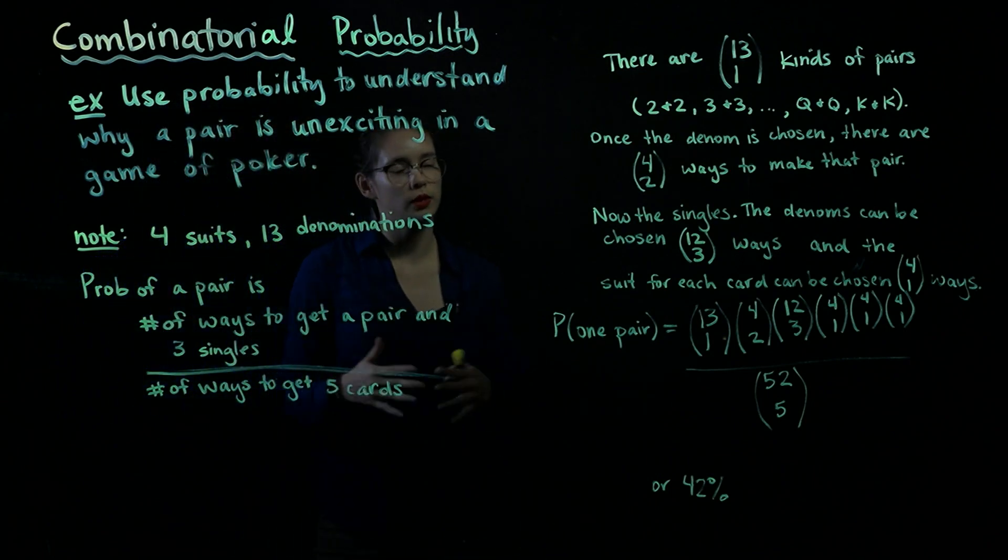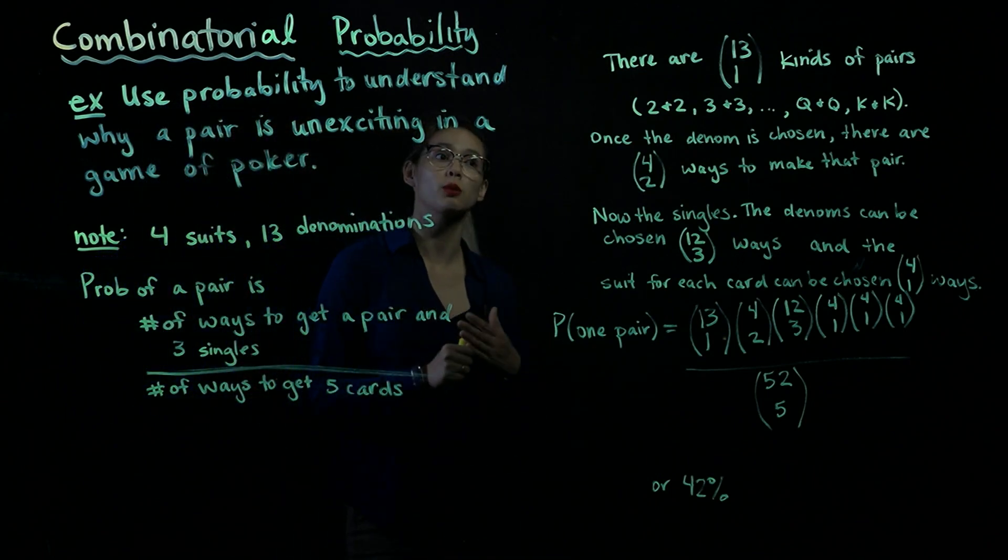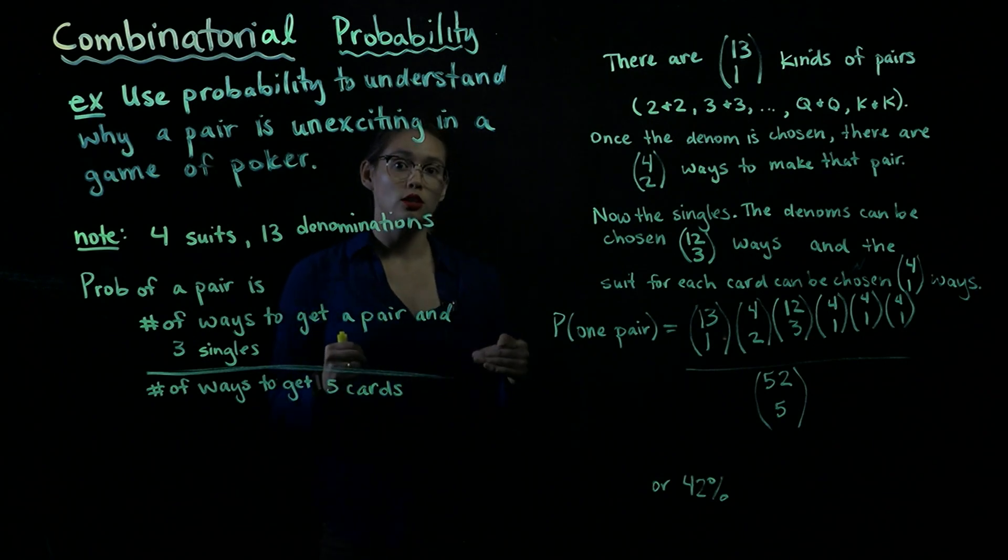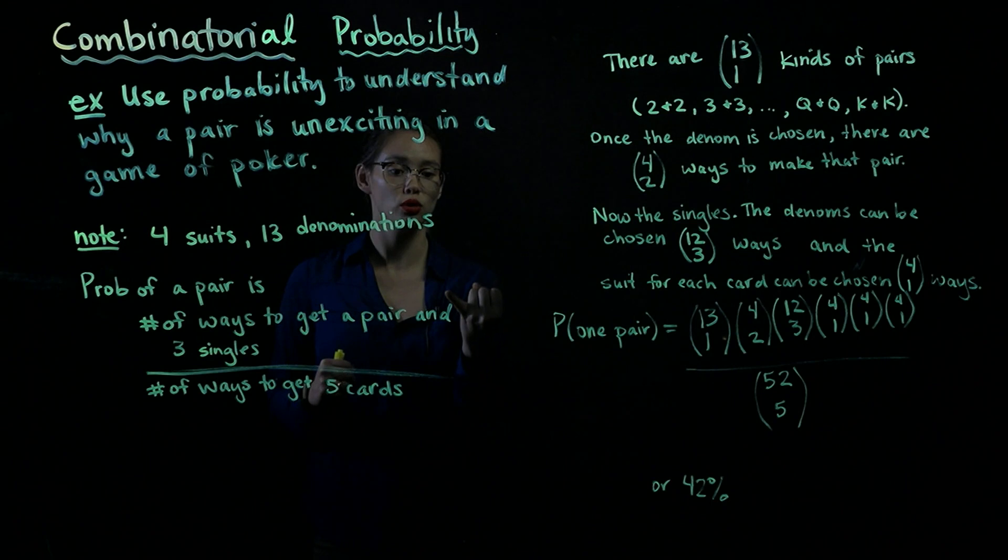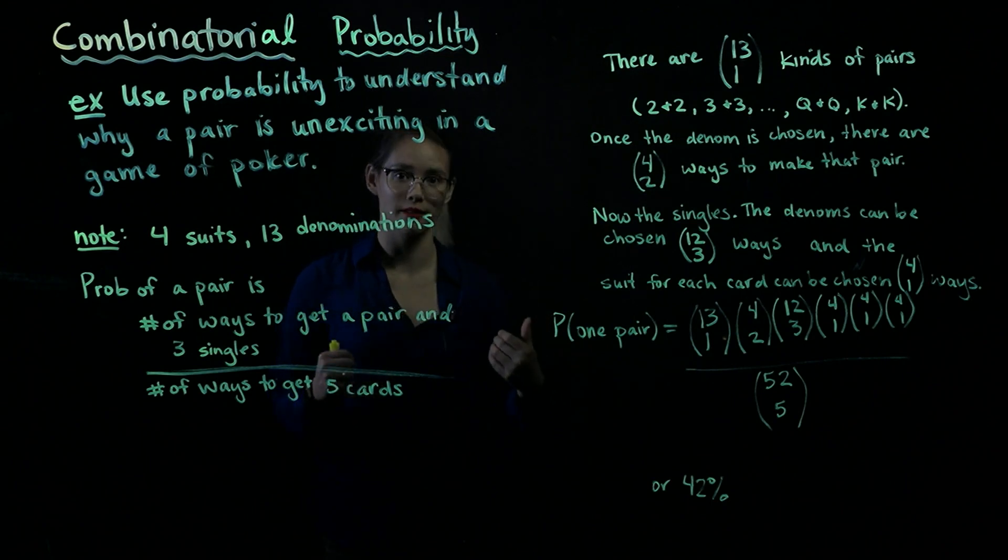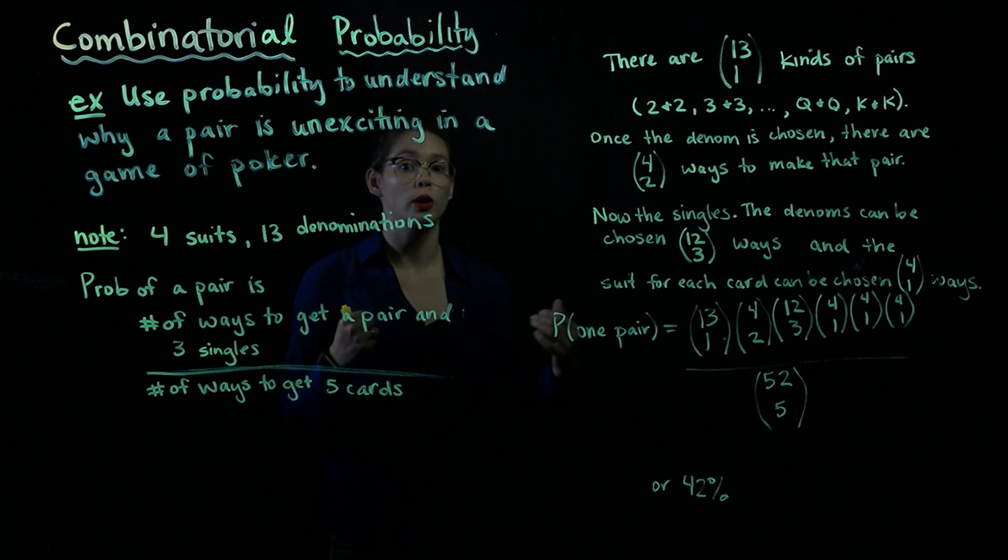There are 13 choose 1 different pairs we could get. We could get twos, we could get threes, we could get fours, fives, sixes, sevens, eights, nines, tens, we could get two jacks, we could get two queens, two kings, or two aces.